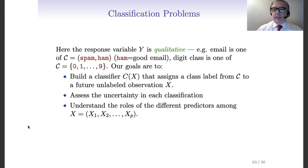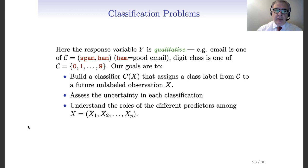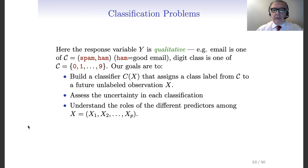It's time to say something about classification problems. Now we have a response variable that, differently from regression, is qualitative. We have already seen the example where email could be spam or ham, where ham stands for good email. In this case we have a qualitative response variable that can take two categories. If we consider the classification of handwritten digits, then we have more than two categories — actually ten categories, the numbers from zero to nine.